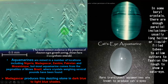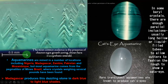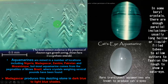Look at these inclusions inside this synthetic emerald. Emerald is also a beryl family gem. The most common evidence is the presence of Chevron type growth zoning inside the synthetic emerald. The scale shown is 0.5 millimeters — that means half a millimeter. The total image size is about two millimeters.